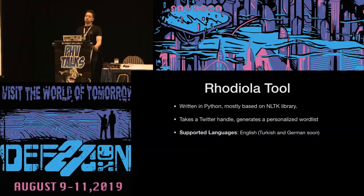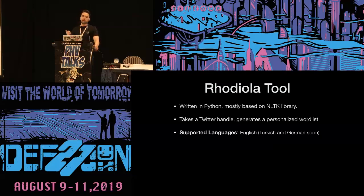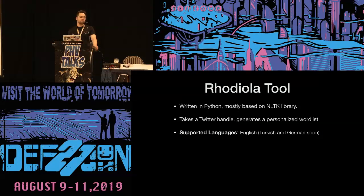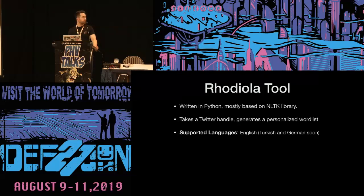To automate all these processes, I built a tool named Rodiola. It is written in Python and mostly based on the NLTK library. It follows the algorithm described in the previous section. With a given Twitter handle, it can automatically compile a personalized word list with elements such as nouns, proper nouns, cities, and years related to them. Currently it only supports English, but I will finish Turkish and German support soon.